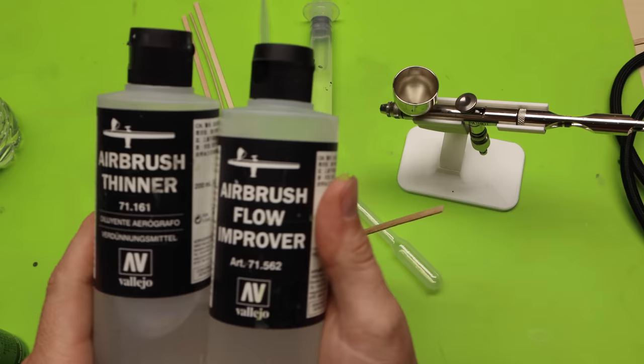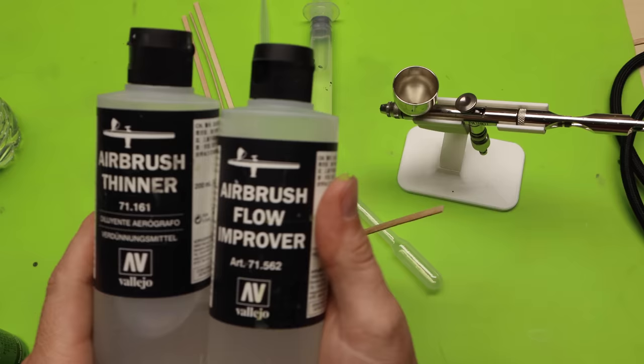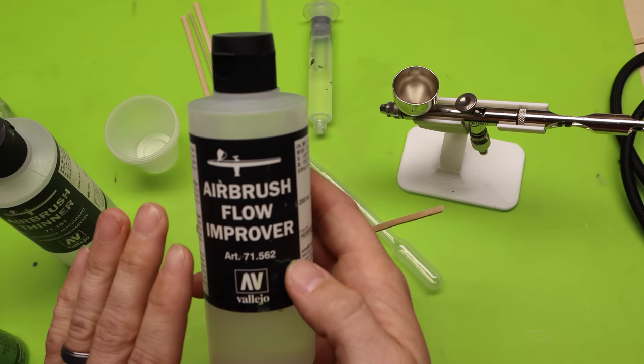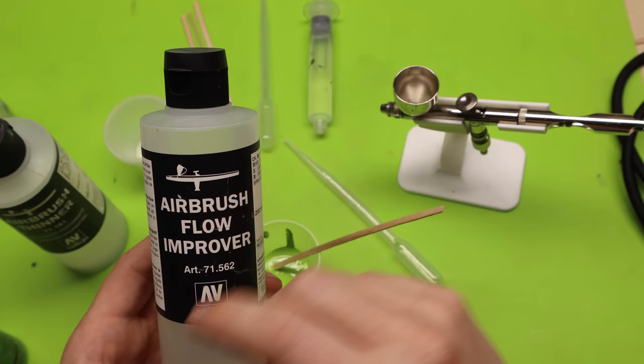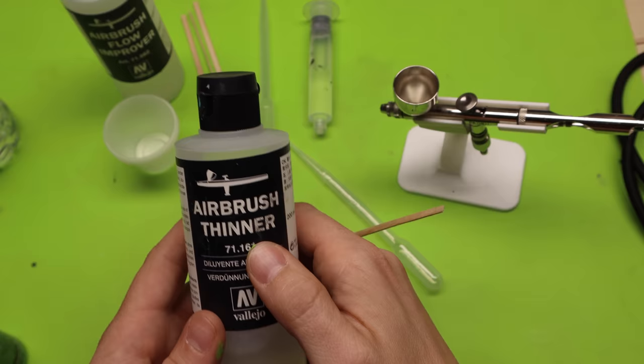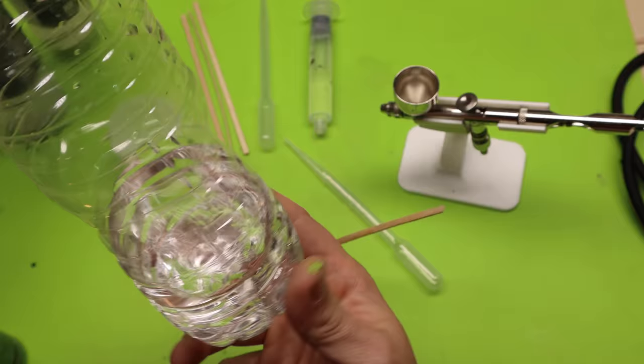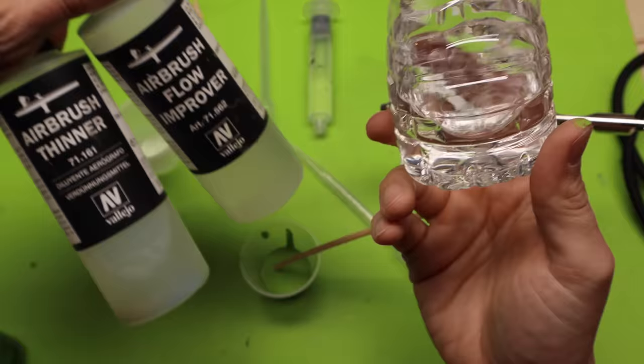So what we're going to do now is we can decide which we want to use. So flow improver is great. It'll thin down your paints really good, just as well as airbrush thinner. But there's actually a retarder in here, which slows the dry of your paint. So if you're putting a lot down and you want it to stay wet for a little while, for some reason, flow improver is the way to go. Then there's airbrush thinner. Airbrush thinner is fantastic. And the great thing about airbrush thinner is it will make your paint dry quickly. So if you're doing a bunch of coats and you want it to dry in between coats faster, airbrush thinner is the way to go. Then the other thing is distilled water.